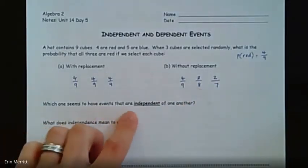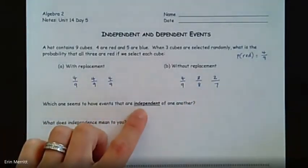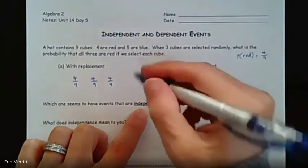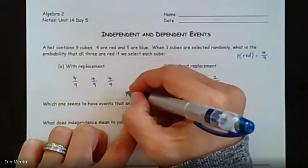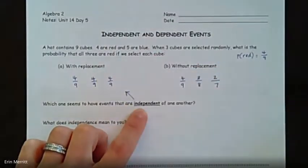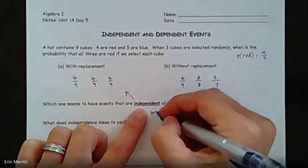This is called independent events over here — with replacement. This one would be dependent because it depends on what happens the first time, and the numbers change the second time around. The with-replacement scenario has events that are independent of one another.